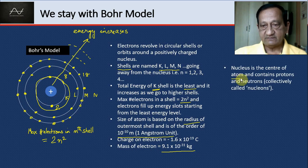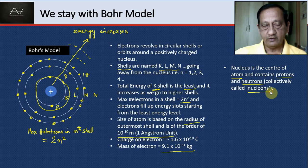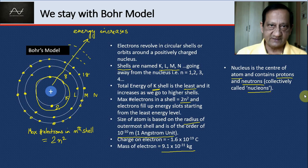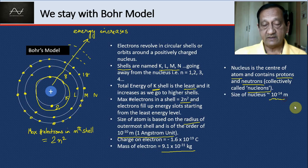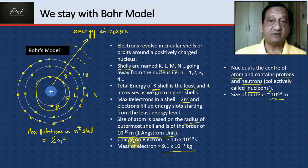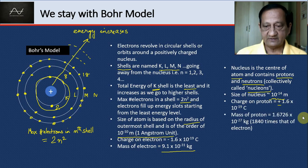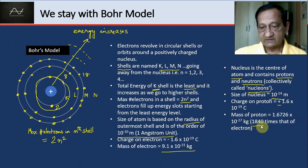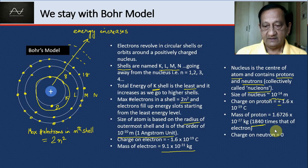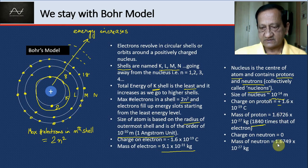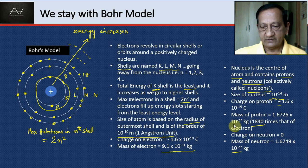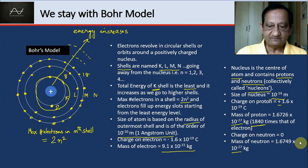The nucleus is the center of the atom and contains protons and neutrons, collectively called nucleons. The size of the nucleus is very small compared to the atom—of the order of 10 to the power minus 14 meters versus 10 to the power minus 10. The charge on a proton is positive, same magnitude as an electron. The mass of a proton is 1840 times the mass of an electron. The charge on a neutron is zero, and its mass is slightly higher than a proton—1.6749 versus 1.6726 into 10 to the power minus 27 kg.